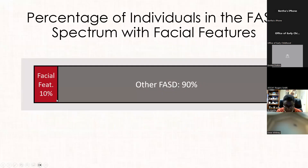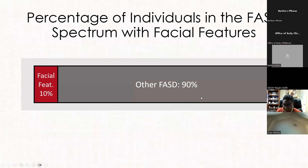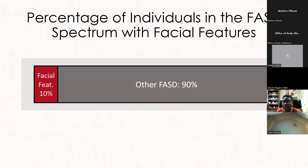Facial features are only present in about 10% of the population. The other 90% are those kids who are having a really hard time, maybe not following directions, having emotional dysregulation — throwing chairs, hitting friends — or the opposite: internalizing feelings, high anxiety, hiding under the table. Those kids aren't getting identified because their cognitive impairment isn't severe enough to suggest an intellectual disability. Most of these kids do not have intellectual disabilities; their cognitive impairment comes in a different form.